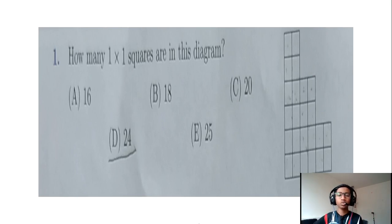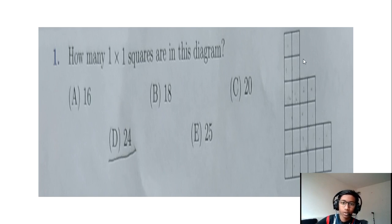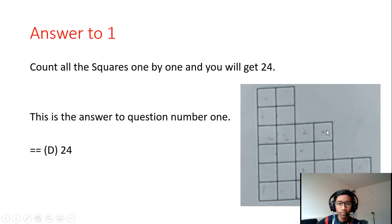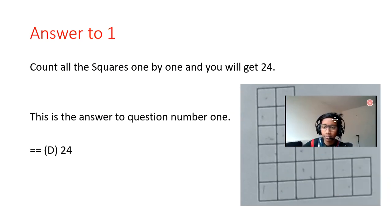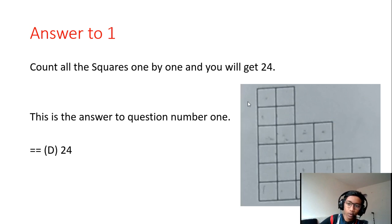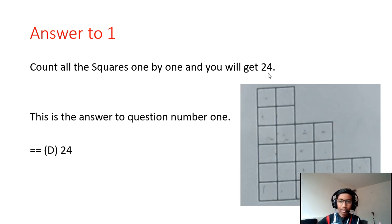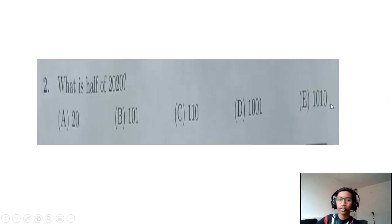The options are 16, 18, 20, 24, and 25. What we have to do is count each single box. So if you go to the solutions, you can see we need to count each single box: one, two, three... all the way up to twenty-four. So there are 24 boxes, each one centimeter by one centimeter, so the answer is D, 24.